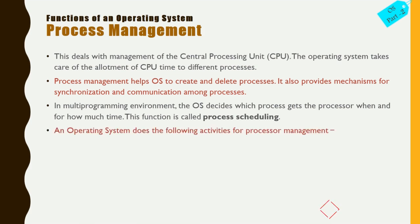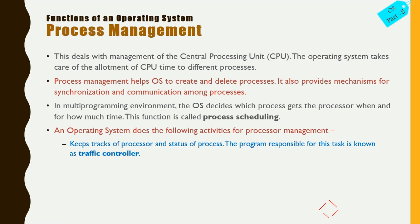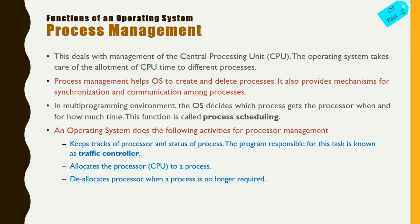An operating system does the following activities for process management: Number one, it keeps track of the processor and the status of each process — the program responsible for this is called the traffic controller. Number two, it allocates the CPU to a particular process. Number three, it de-allocates the processor when the process no longer requires it.